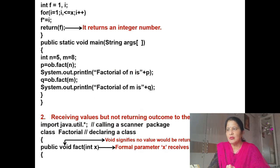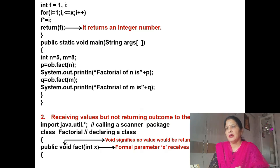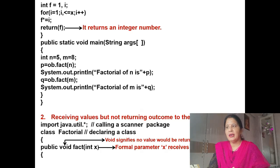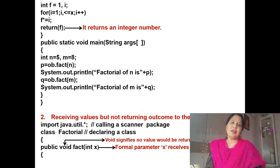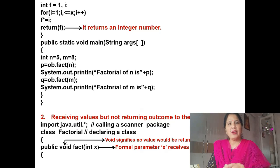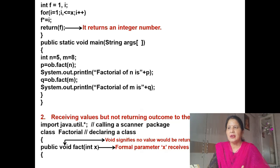Now the method body: 'int f = 1', and 'int i' for the loop. We start the for loop: 'for(i = 1; i <= x; i++)'. Because it will find the factorial up to the value we entered. Then 'f *= i', which is the same as 'f = f * i'. Now 'return f' — because we are finding the factorial and it returns an integer number. Then curly bracket close.